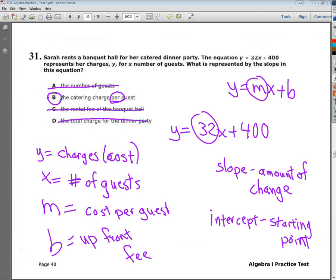Because the slope, in this case, represents the thing that lets us know how much more it costs for each person that comes to that catered dinner party. And for Sarah's sake, we hope that it's a lot of people so she doesn't waste her money and feel sort of sad.